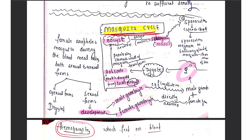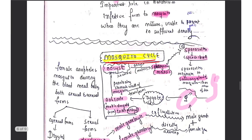The ookinete is found in the midgut and further develops into the oocyst. The oocyst then undergoes sporogony — meiosis — to form the sporozoites. As mentioned, sporozoites are the infective form; they are spindle-shaped. These sporozoites then migrate to the salivary gland of the mosquito. All this development — the ookinete, oocyst, and sporozoite formation — occurs in the stomach wall of the mosquito. Once stored in the salivary gland, the human life cycle continues when the mosquito bites another person.